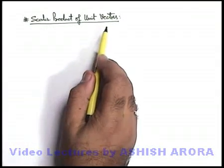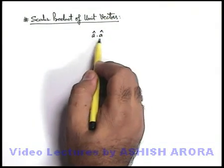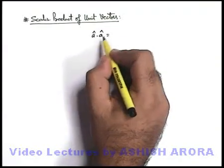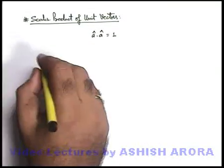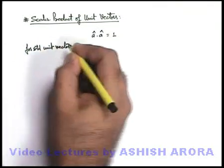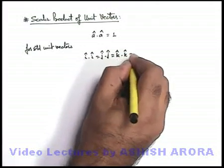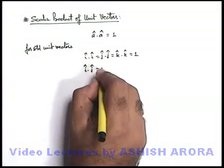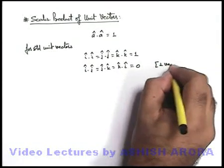For unit vectors, for two identical unit vectors like â·â, it is equal to the square of the magnitude, and since the magnitude of a unit vector is one, the product of two identical unit vectors is always one. For standard unit vectors: î·î = ĵ·ĵ = k̂·k̂ = 1. For perpendicular unit vectors: î·ĵ = ĵ·k̂ = k̂·î = 0.